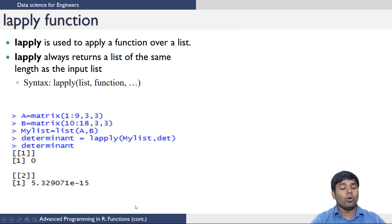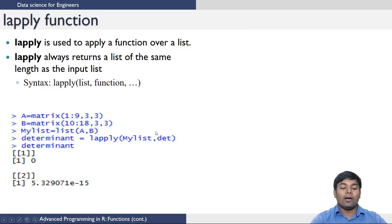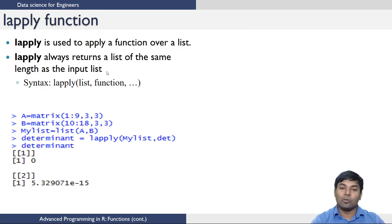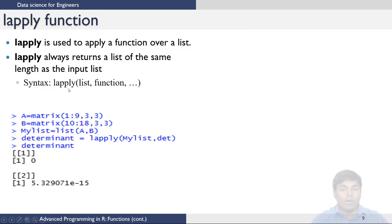Next we move on to the lapply function, which is used to apply a function over a list — that is why it has the L. lapply always returns a list of the same length as the input list. The syntax is: use the lapply command, specify the list on which the function has to be applied, and then the function to be applied.